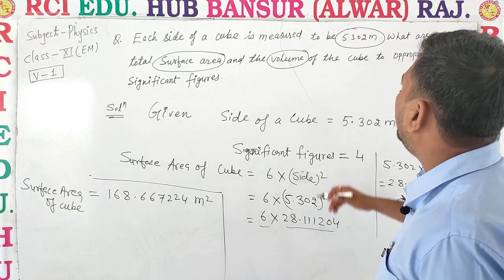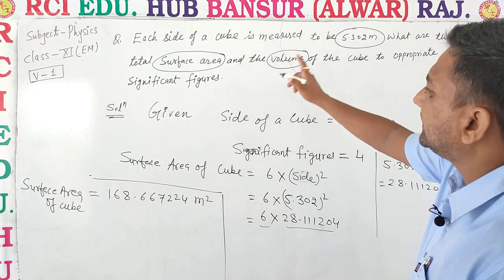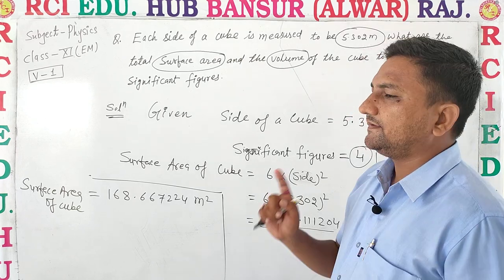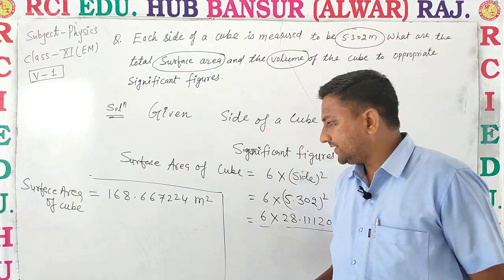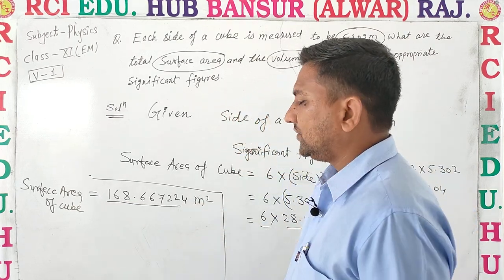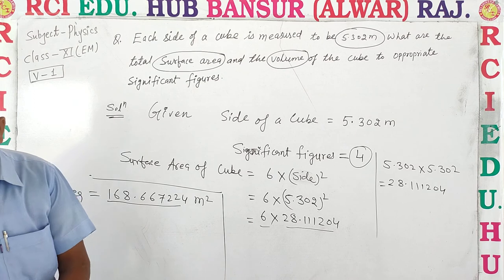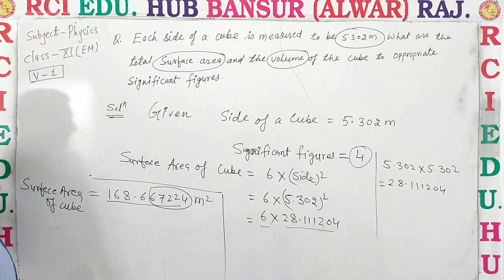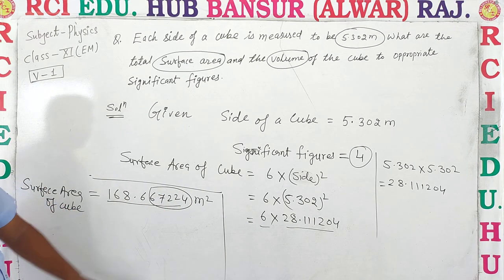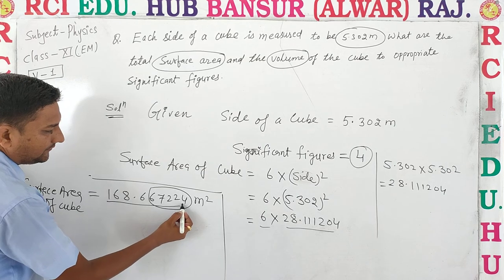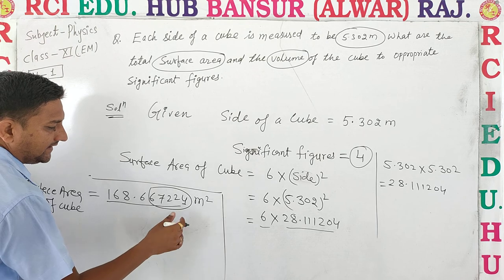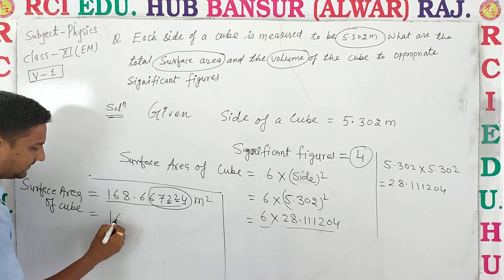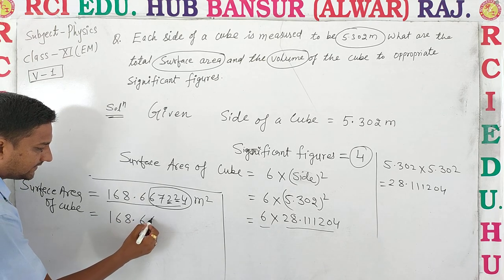अब देखना है कि significant figures कितने थे given value में। Given value में significant figures हैं 4, तो answer भी 4 significant figures में आना चाहिए। Rounding off करते हैं। 4 है — 5 से less than है, remove. 2 है — remove. 2 है — remove. तो हमारे पास आ गया 168.667.